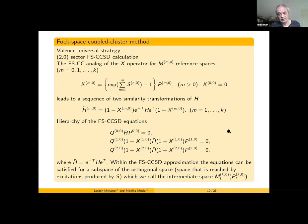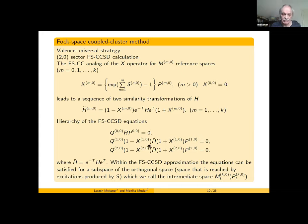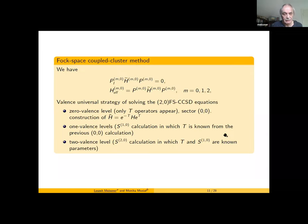These equations must be solved in a hierarchical way. We start with the zero-valence sector, then the one-valence sector, and so on. The T cluster amplitudes appear in the one-valence sector as known parameters, and in the two-valence sector all previously calculated cluster amplitudes are known. In fact, the expansion is linear in the unknown cluster operators.